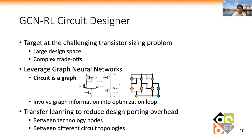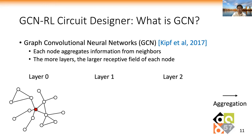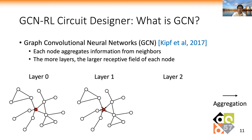GCN is short for graph convolutional neural networks. In one GCN layer, each node of the graph aggregates features from neighboring nodes. The more GCN layers, the larger the receptive field. For example, in layer 0, the red node only has its own features. After GCN layer 1, it has information from its neighbors. After GCN layer 2, it has information from neighbors of neighbors.